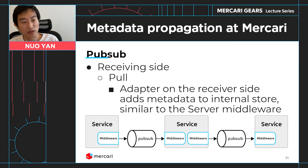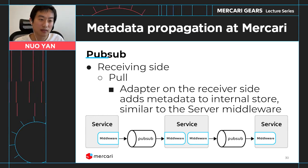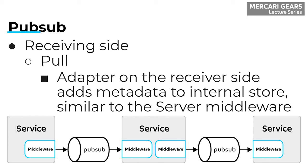On the receiving side, PubSub provides two ways you can receive a message: polling and pushing. By polling, your handler is basically polling the queue at a frequency, and once it has the message you care about, the handler gets it. In Google's PubSub library for Golang, it provides a framework for users to plug in adapters. So we define an adapter on the receiving side that adds metadata to the internal store, similar to the server middleware in the HTTP and gRPC case. Once it gets the message, it reads the message attributes to get the metadata out, then transforms and stores them to the internal store.